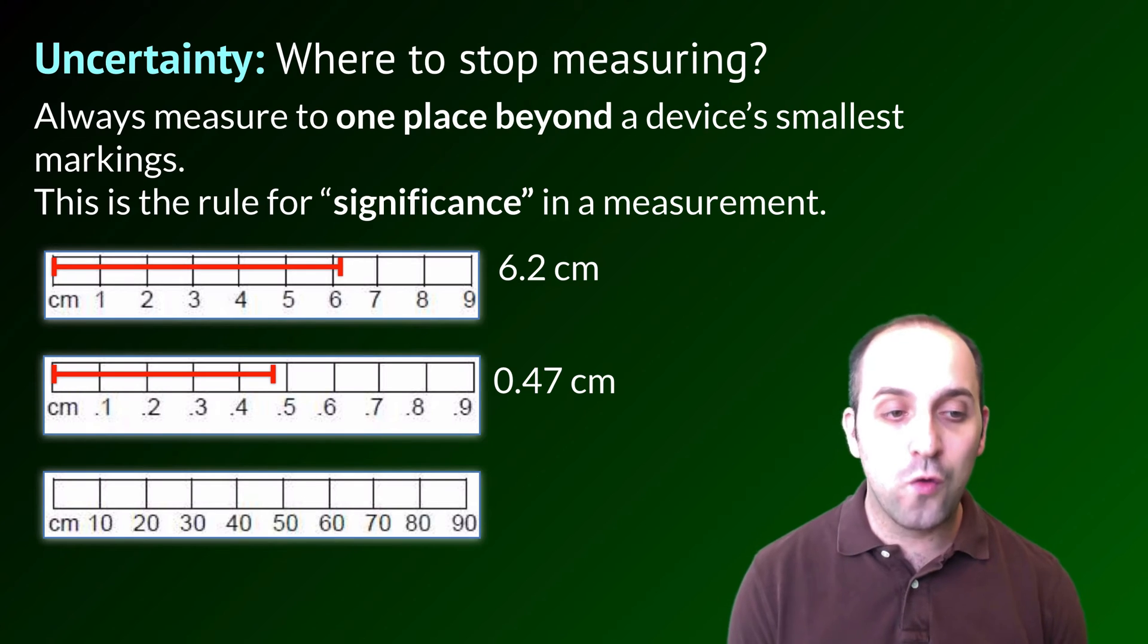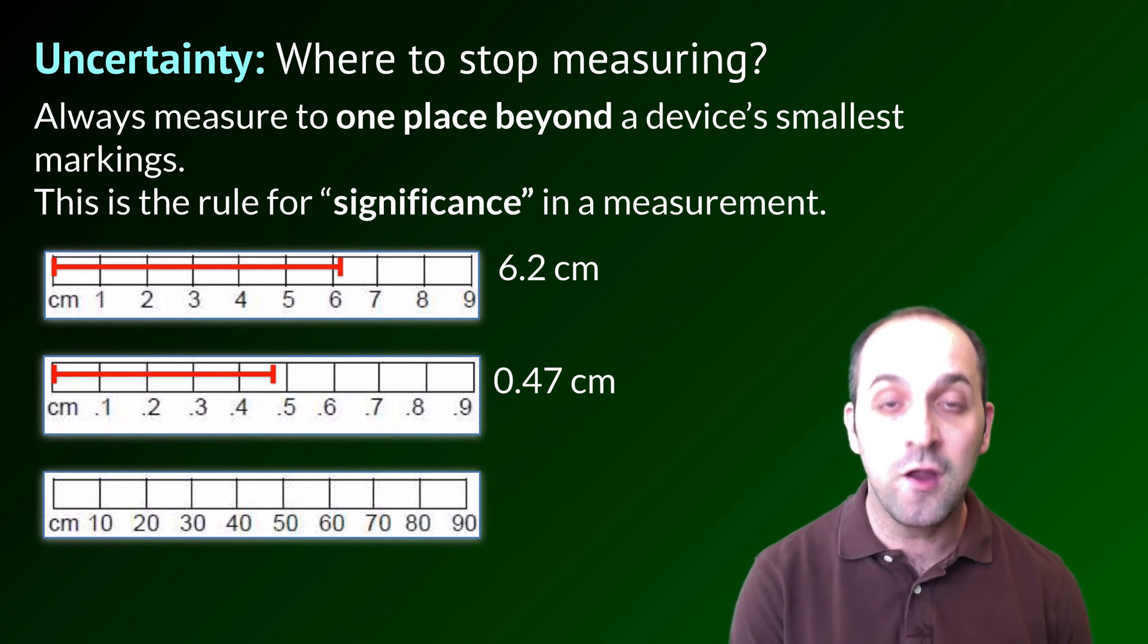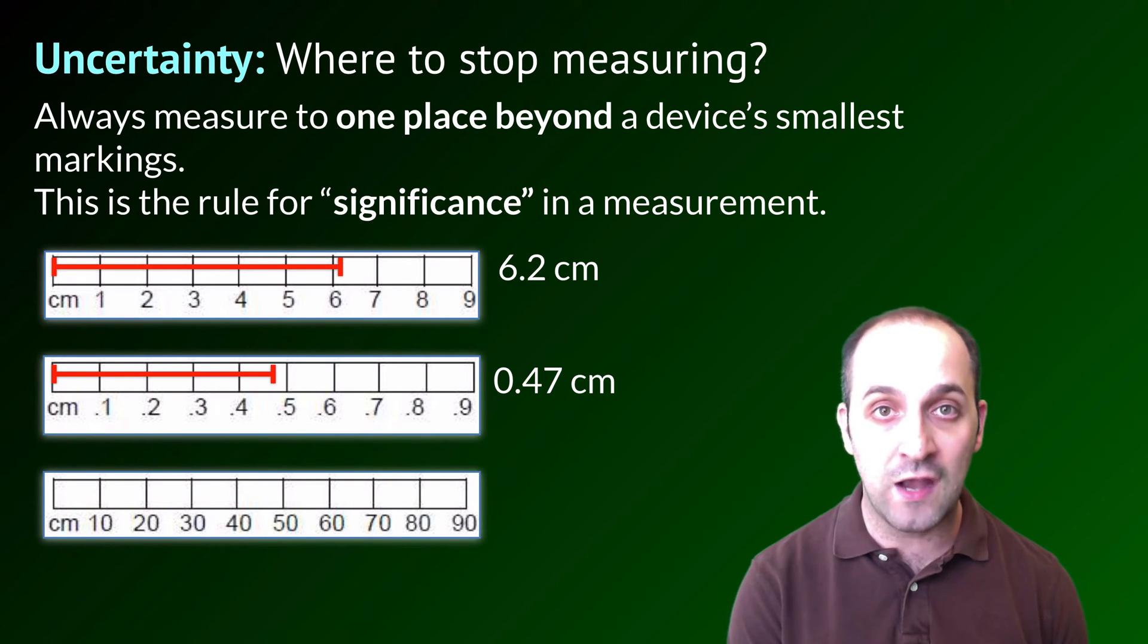This ruler goes to the nearest tenths in its markings, and so I can measure to one place beyond that, and so I thought there would be a 7 occupying the hundredths place based on how long this particular line is.